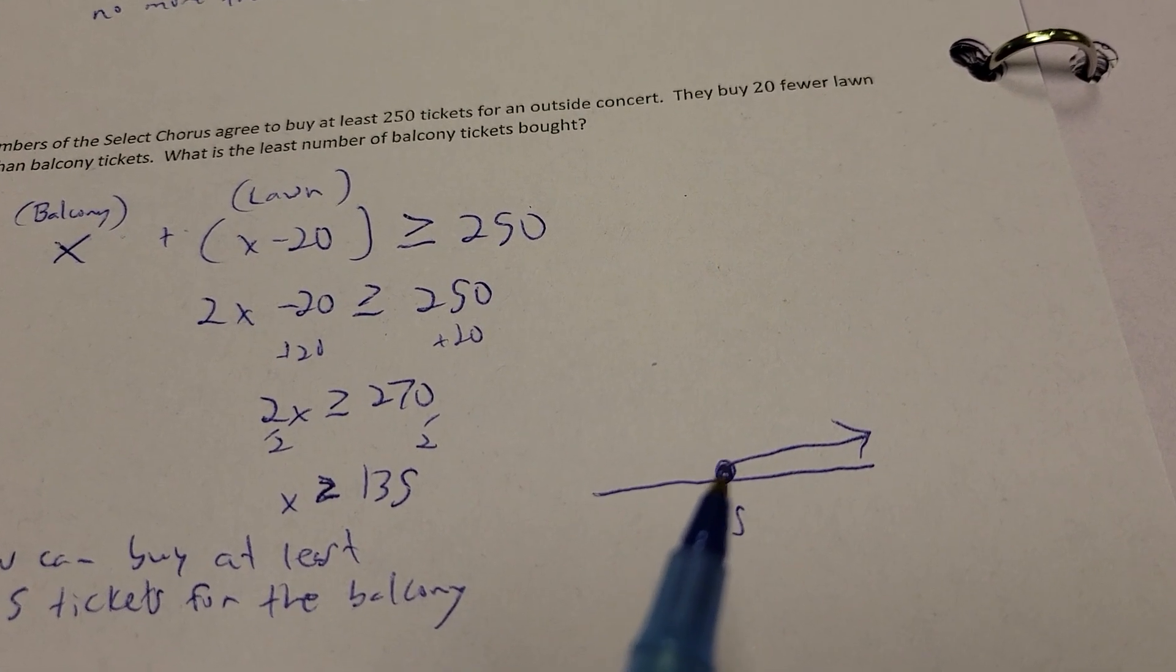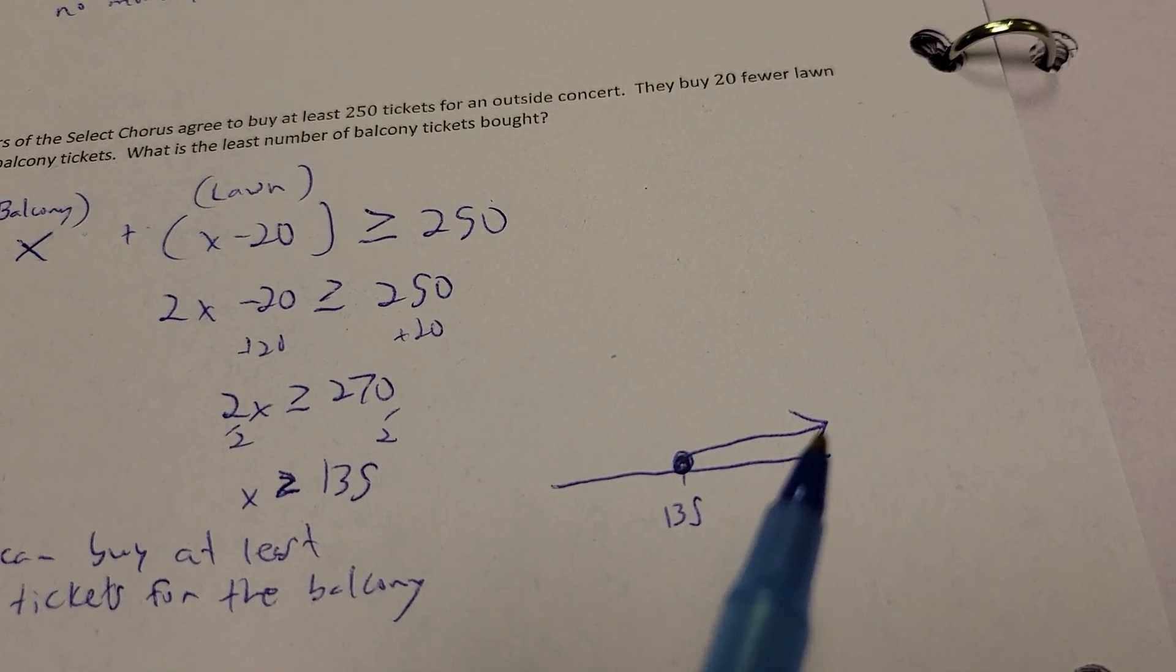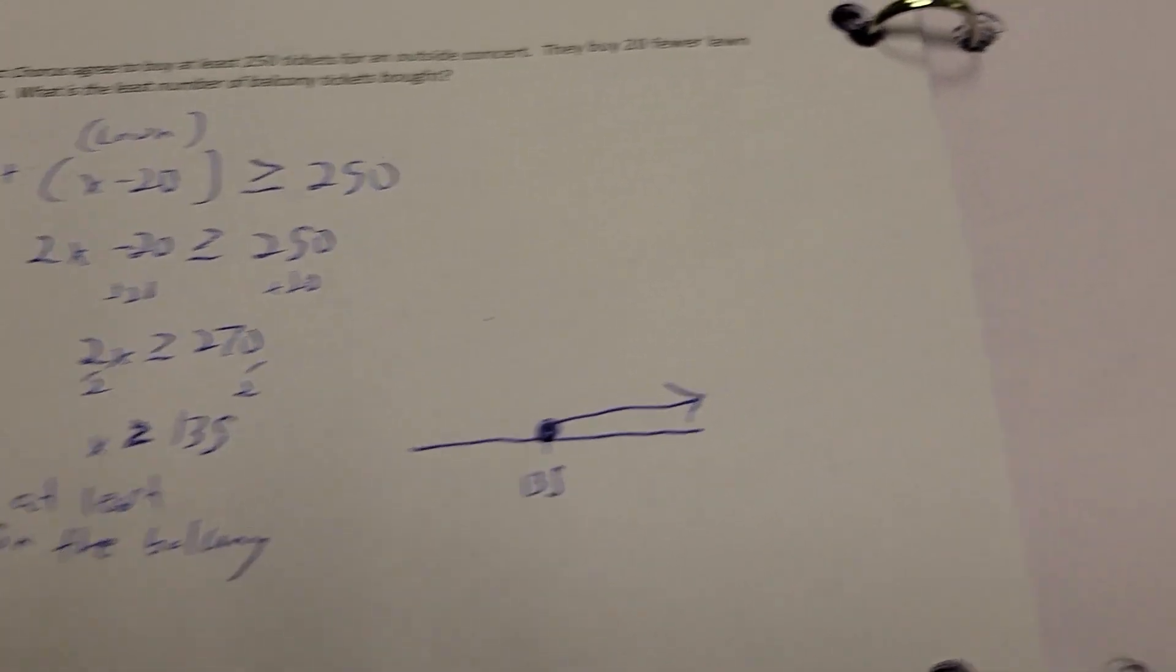And to graph that, 135, you darken it in and move to the right. So, you can have equal to or greater than that.